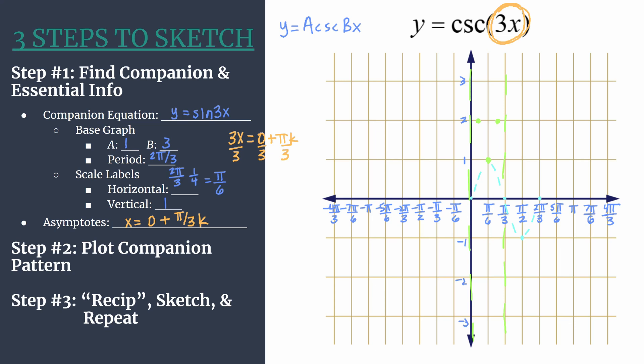A few more reciprocals. If you take the reciprocal of negative one half you get negative two. Negative one gives you negative one. Another negative one half gives negative two. If you continued to 2 pi you would get another undefined value, another vertical asymptote.